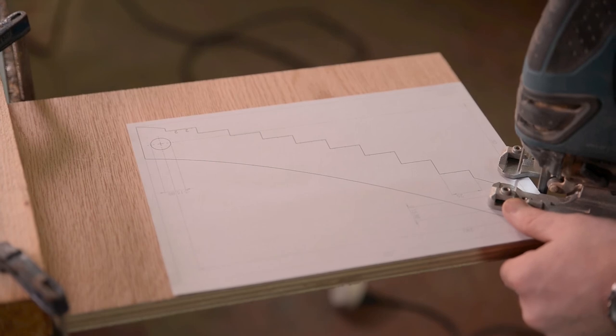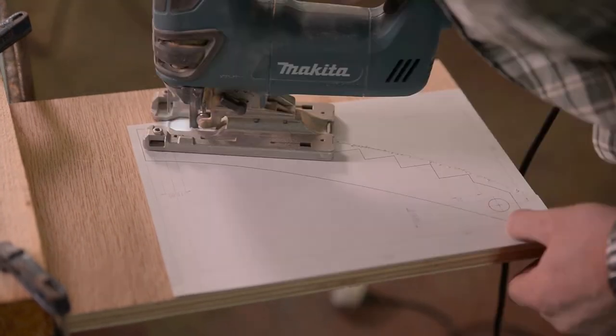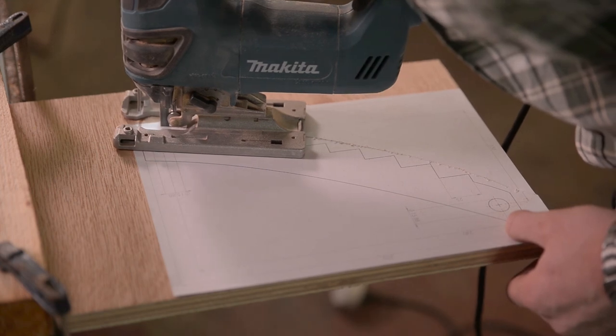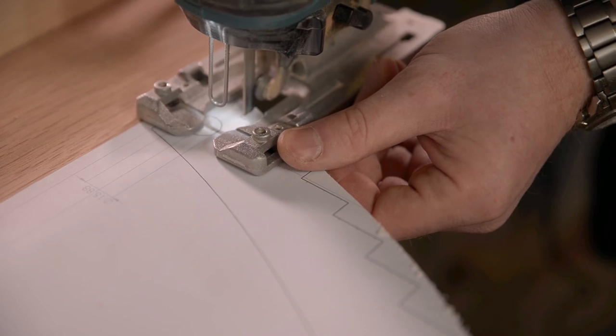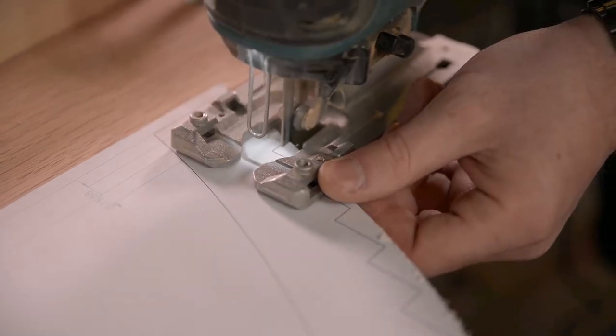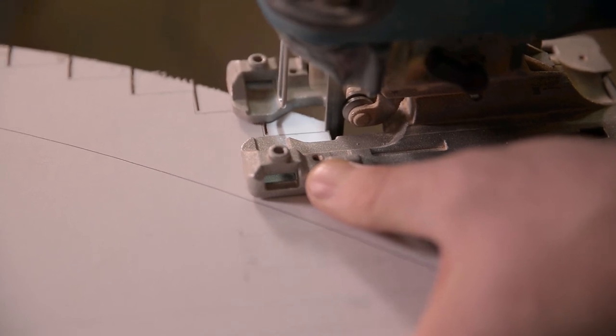Using a jigsaw I started cutting the serrated side of the template, trying to cut as close to the line as possible without touching it. I find that using fine teeth blades, usually meant for metal, results in a much cleaner cut.